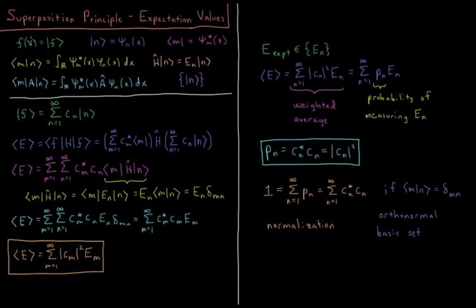We start with a function f, represented in Dirac notation as the ket vector f. We have a basis function n, which is psi_n, the n-th eigenfunction of our Hamiltonian. We have the bra vector m, which is psi_m star. We have the overlap integral of m and n, which is the integral over all real numbers from negative infinity to infinity with respect to x of psi_m star psi_n — the braket of bra vector m and ket vector n.